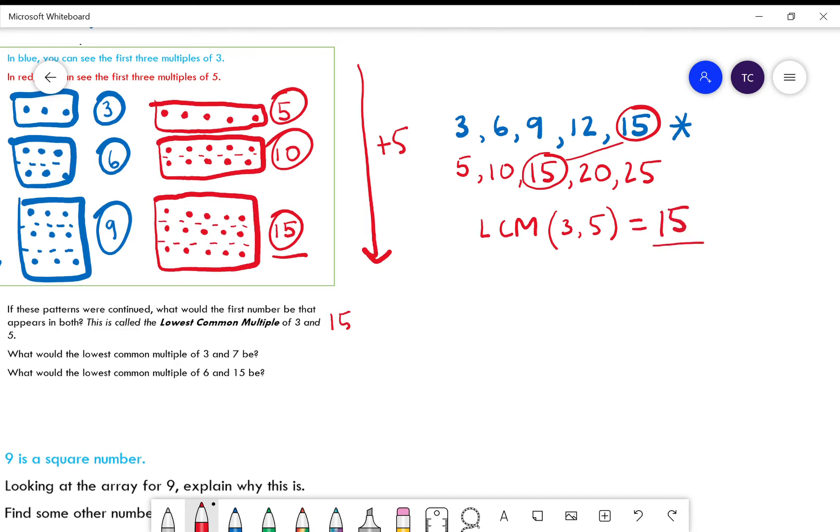Okay, then for 3 and 7, let's write out some multiples of three: 3, 6, 9, 12, 15, 18, 21, 24. If that's not enough we can add in some more later.